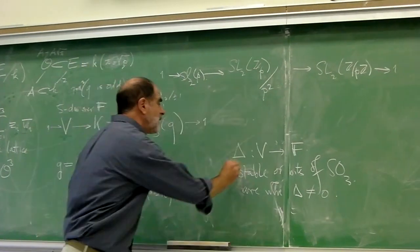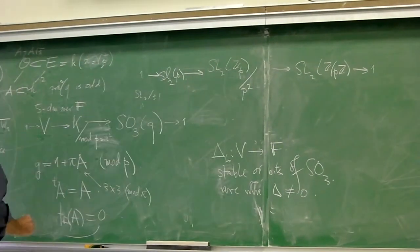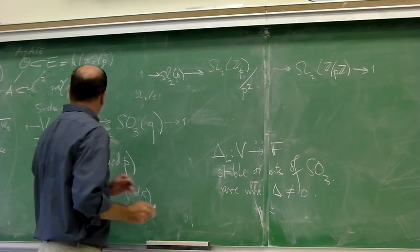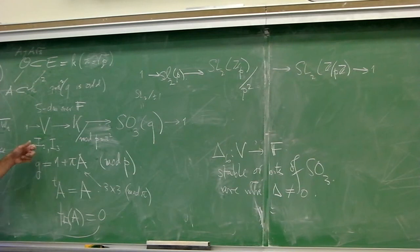And delta is of degree six. And the two polynomial invariants on this representation of degree two and three, and the delta has a nice formula in terms of these polynomial invariants, basically I2 cubed minus 27I3 squared.